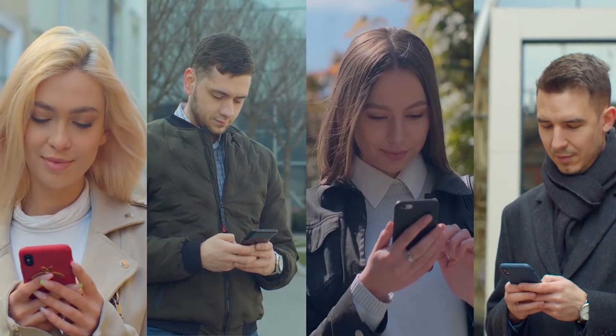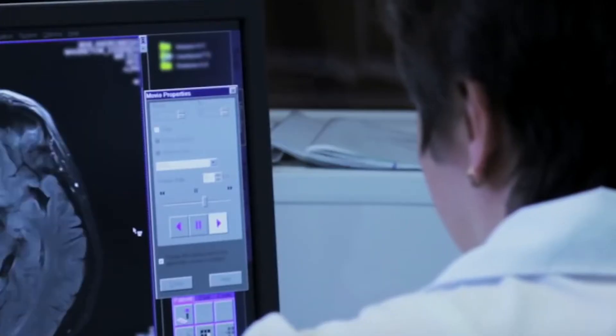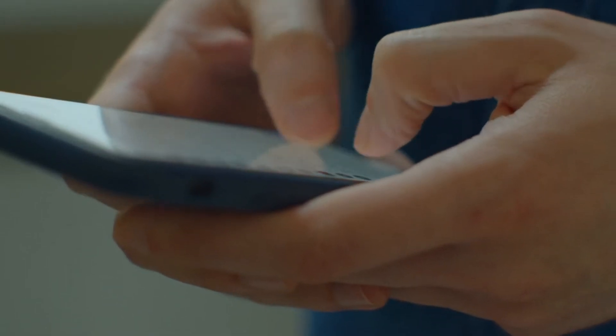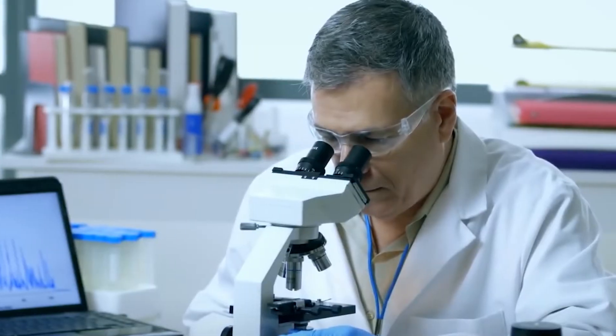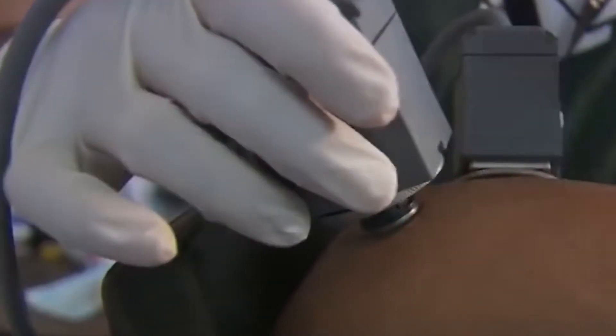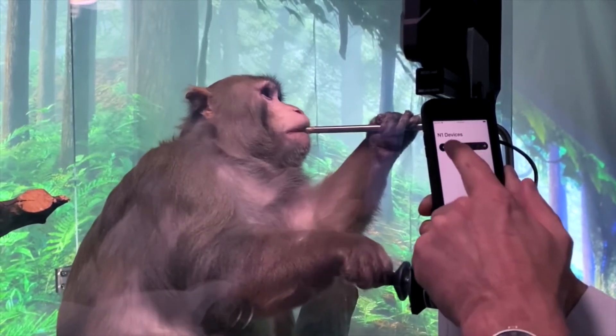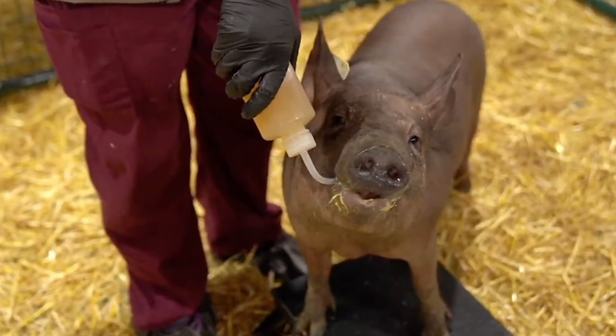You might already know that billionaire entrepreneur Elon Musk is already working on his brain-machine interface startup Neuralink, and the company is planning to launch clinical trials on humans. Musk promised that the technology will enable someone with paralysis to use a smartphone just with their mind faster than someone using their thumb. The company already successfully implanted artificial intelligence microchips in the brains of a monkey named Pager and a pig named Gertrude.